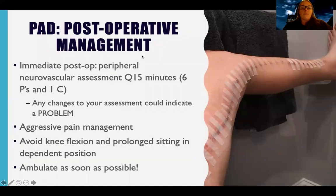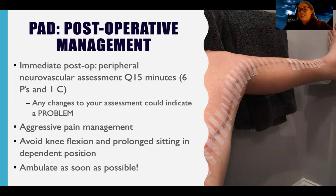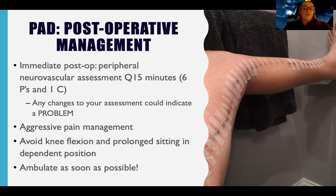After the fem-pop bypass, the top assessment priority is peripheral neurovascular status — checking the five P's (and one C): pain, movement, numbness and tingling, temperature, color, and capillary refill. Any changes need to be reported to the physician right away. These assessments confirm whether good perfusion is being maintained post-operatively.